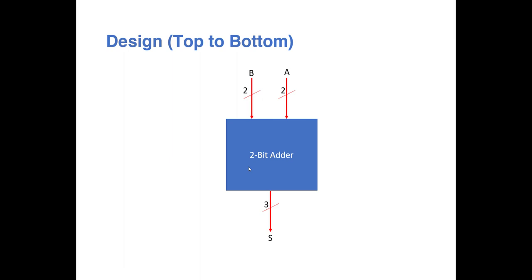First we are going to design our hardware using a block-based design approach, following a top-down approach. Starting from the topmost level, I will abstract my circuit as a black box — I don't know what is inside. It takes two inputs A and B, each two bits wide, and gives one output called S which is three bits — basically the sum of these two.